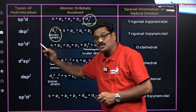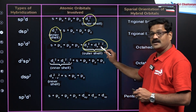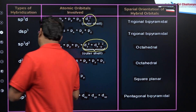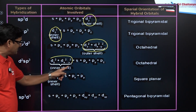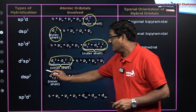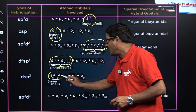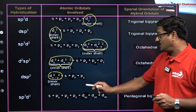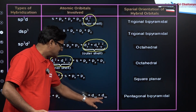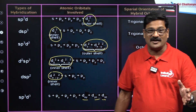For SP3D2 hybridization, two D orbitals are used: DZ² and DX²–Y², giving octahedral geometry. Similarly, D2SP3 also gives octahedral geometry but uses inner orbitals. For DSP2, the DX²–Y² orbital is used and it gives square planar geometry. For SP3D3, the DXY, DYZ, and DZX orbitals are used, giving pentagonal bipyramidal geometry.